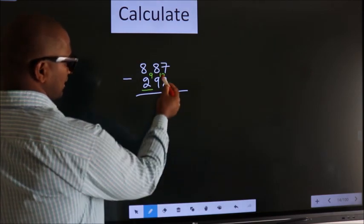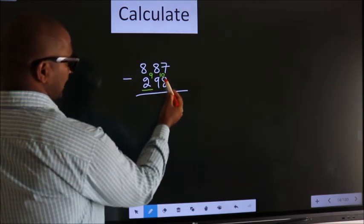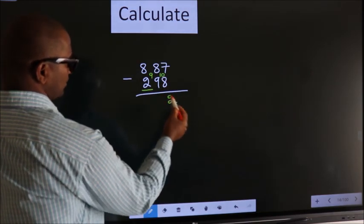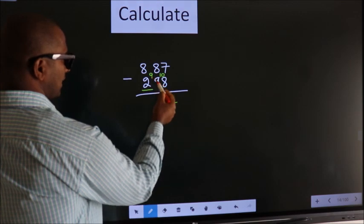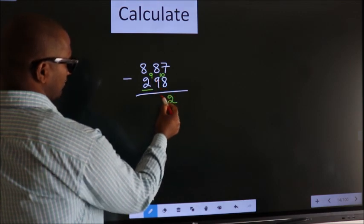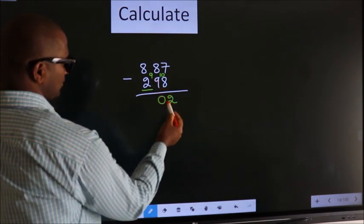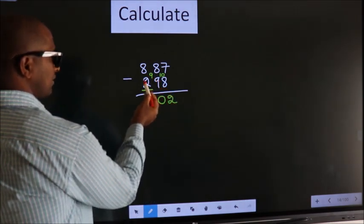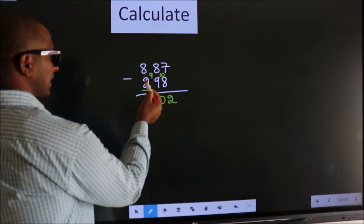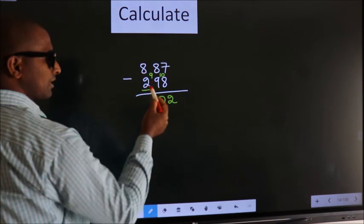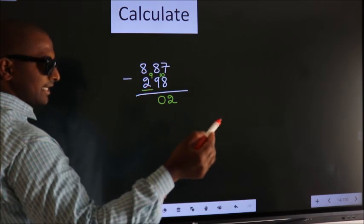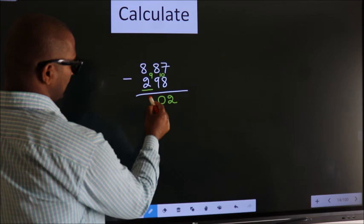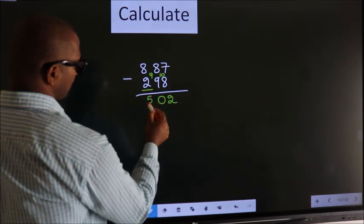Next, 10 - 8, we get 2. 9 - 9, we get 0. For the first digit, you do 8 - 2, we get 6. Decrease more by 1, we get 5.